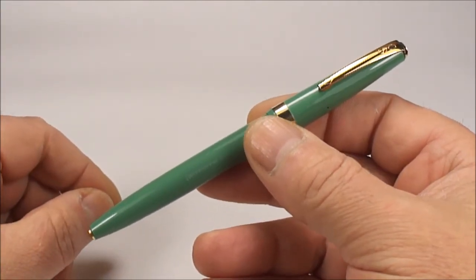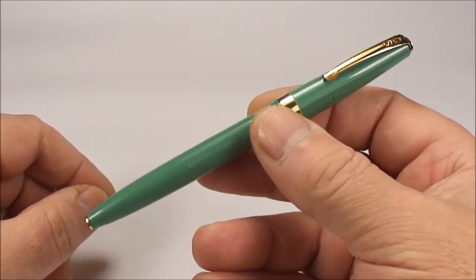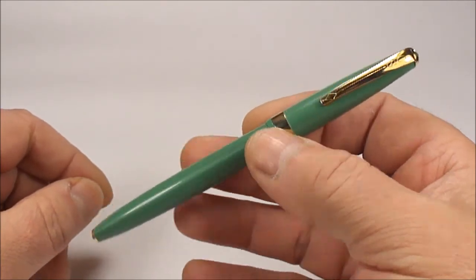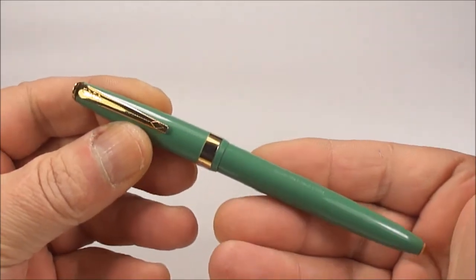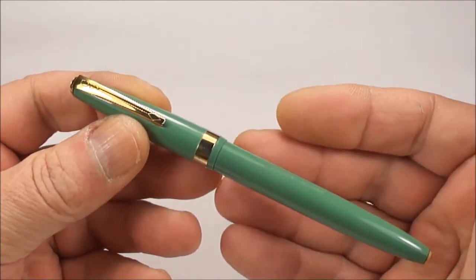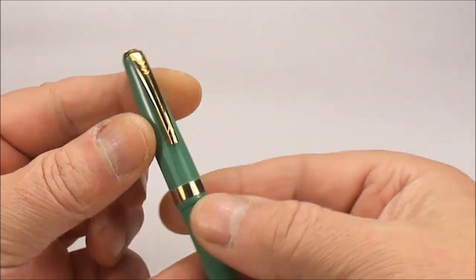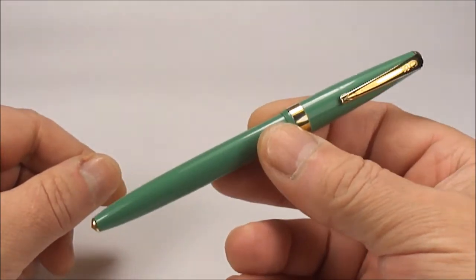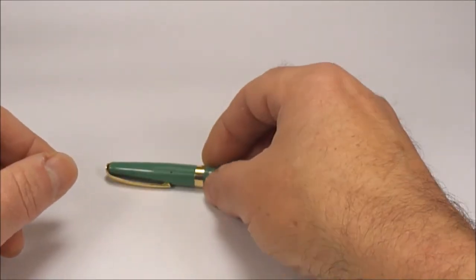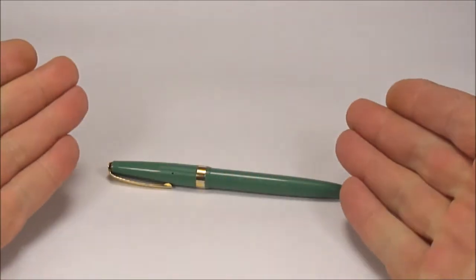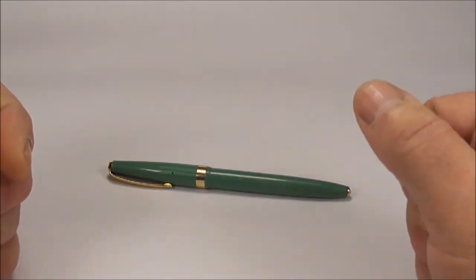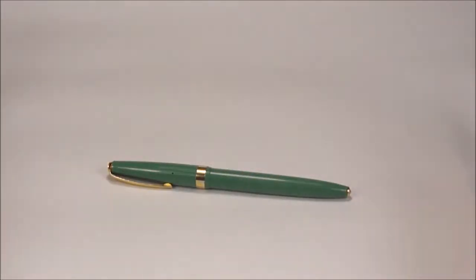So what we have is a Conway Stuart 68, press-sac or pre-sac, from around about the 1960s in this lovely duck egg green color with gold filled trim. And well yeah, a nice introductory pen if you like, or a school pen of that particular era. So I hope you've enjoyed looking at the pen as much as I enjoyed showing it to you. Don't forget you can leave a comment, but for this time I'm just going to say bye bye for now.